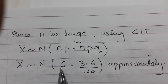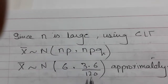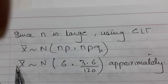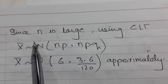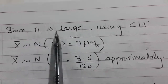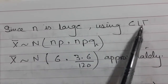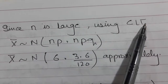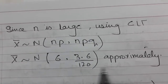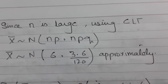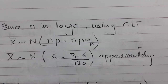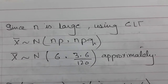We write the distribution of the sample mean as approximately normal with mean 6 and variance 3.6/120. Since n is large, by the Central Limit Theorem the sample mean follows this approximate normal distribution. When the question says 'write down the distribution of the sample mean,' you must state all of this.